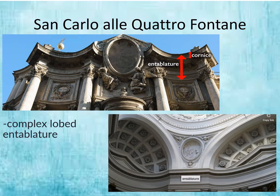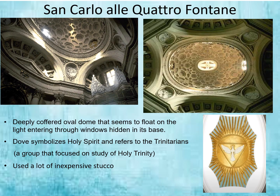We have a complex lobed entablature—both in the interior and exterior spaces. The deeply coffered oval dome cannot be denied. This is where the lantern would be on the exterior, so we have the supernatural light coming down through this dome from that lantern, floating and emanating down. There are some spaces that emit light, as you can see in the images. At the center of our ovular dome we have a dove, which symbolizes the Holy Spirit. This refers to the Trinitarians—a group whose main focus was the study of the Holy Trinity. In order to create this space and add all this decoration, they used a lot of inexpensive stucco, which is extremely common during the Baroque period.